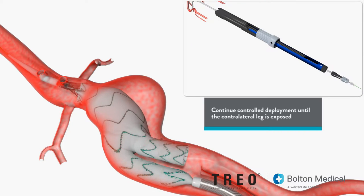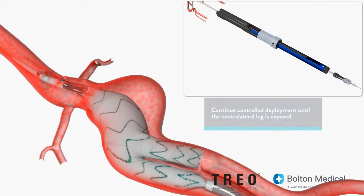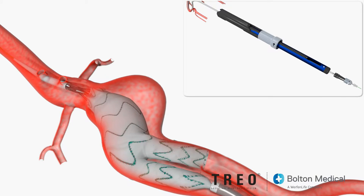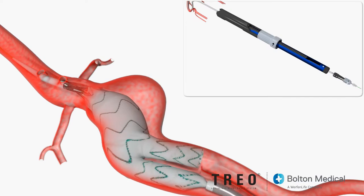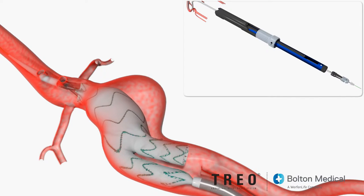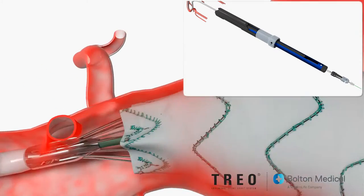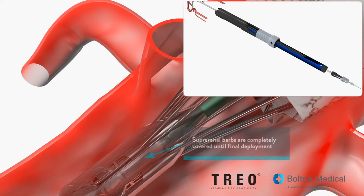This will secure the distal end of the device using the ipsilateral leg. At this point in the procedure, the trio can be repositioned a final time as the dual fixation of the system is still constrained.